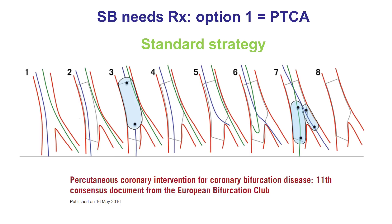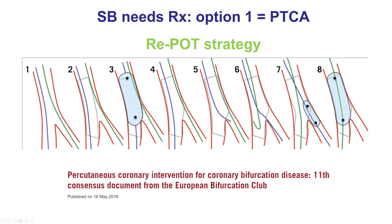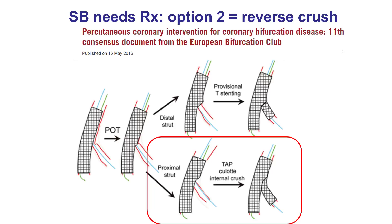How can we treat it? There are broadly two options. One is balloon angioplasty, which involves performing the proximal optimization technique, rewiring into the side branch through a distal strut, and then performing kissing balloon inflation — or alternatively, balloon inflation on the side branch only followed by a re-POT strategy. The other option is to place an additional stent. The most common way to do this is by wiring through a proximal strut and placing a stent using the internal crush technique, which is what we decided to do in this case.